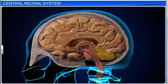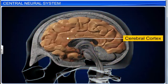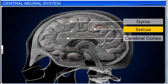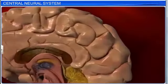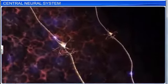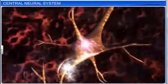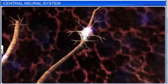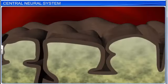The cerebral hemispheres are covered with a layer of cells known as the cerebral cortex. It has prominent folds with ridges and depressions called gyri and sulci, respectively. The neuron cell bodies concentrated in the cerebral hemispheres lend a gray color to the region. Therefore, the cerebral cortex is called gray matter.